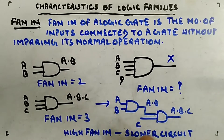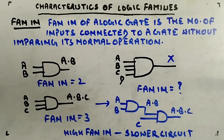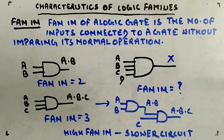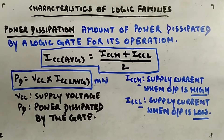If you want less depth in your circuit, use high fan-in; if you want a faster circuit, use low fan-in. Unlike fan-out, there are no calculations like I-out over I-in here — it's simply about how many inputs a gate can handle. Now let's move on to the next characteristic: power dissipation.